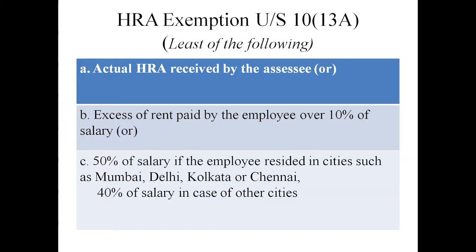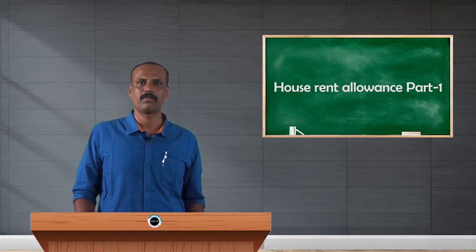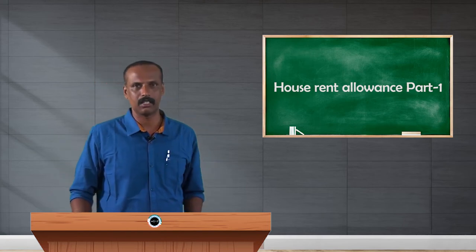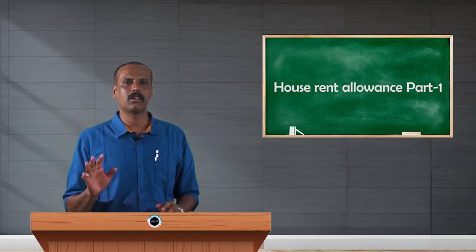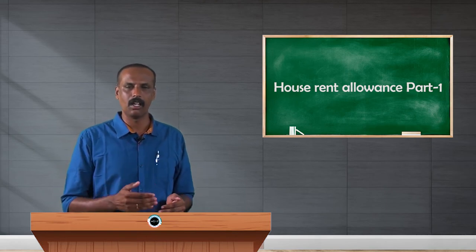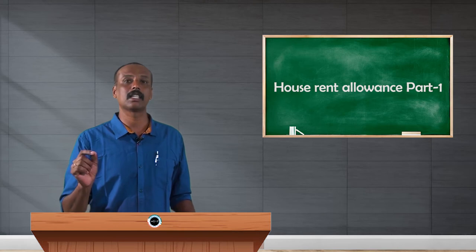It is 50 percent in the case where an employee is in a metropolitan city like Chennai, Delhi, Calcutta, and Mumbai. If an employee is working in these four cities, the third component is 50 percent of salary. In other cities, 40 percent of salary has to be taken. So out of these three items, whichever is the least amount is exempted.